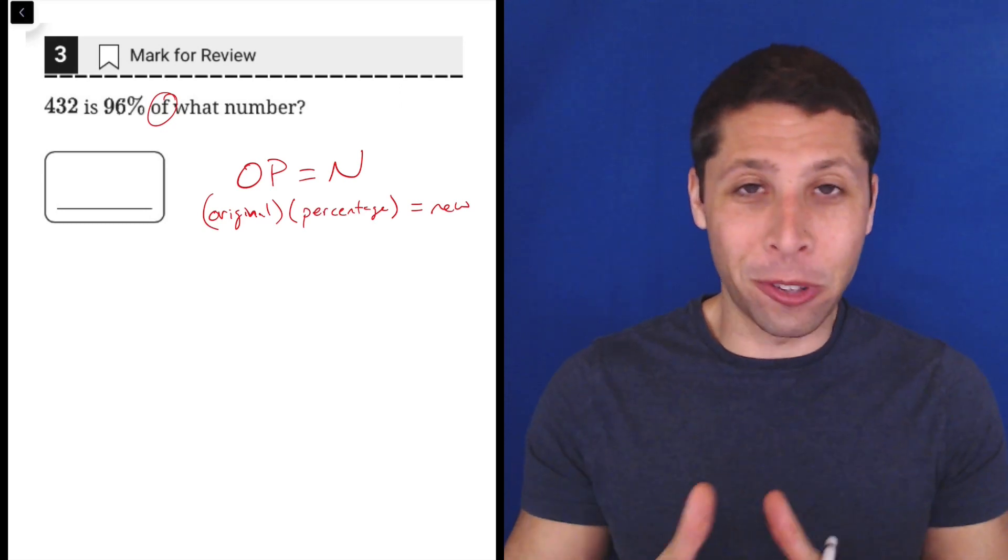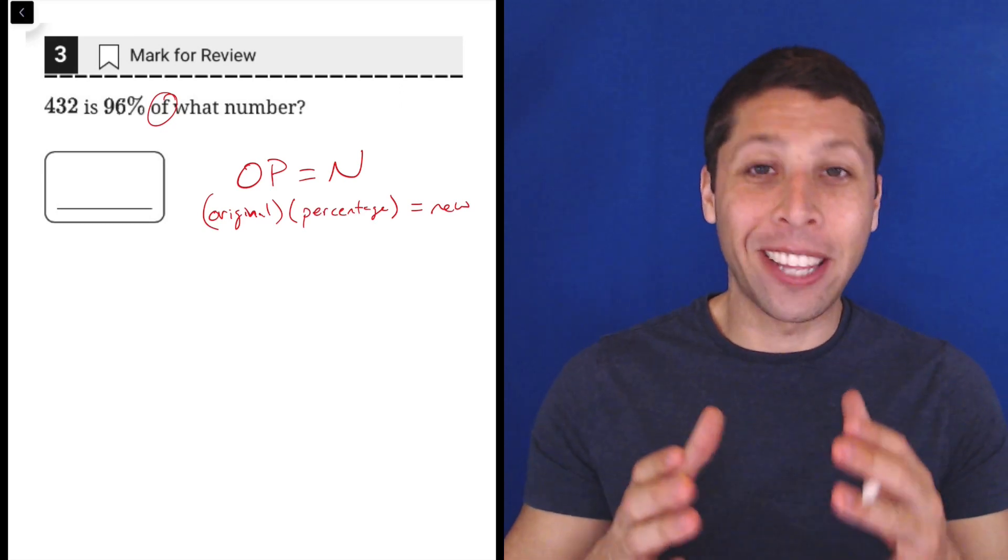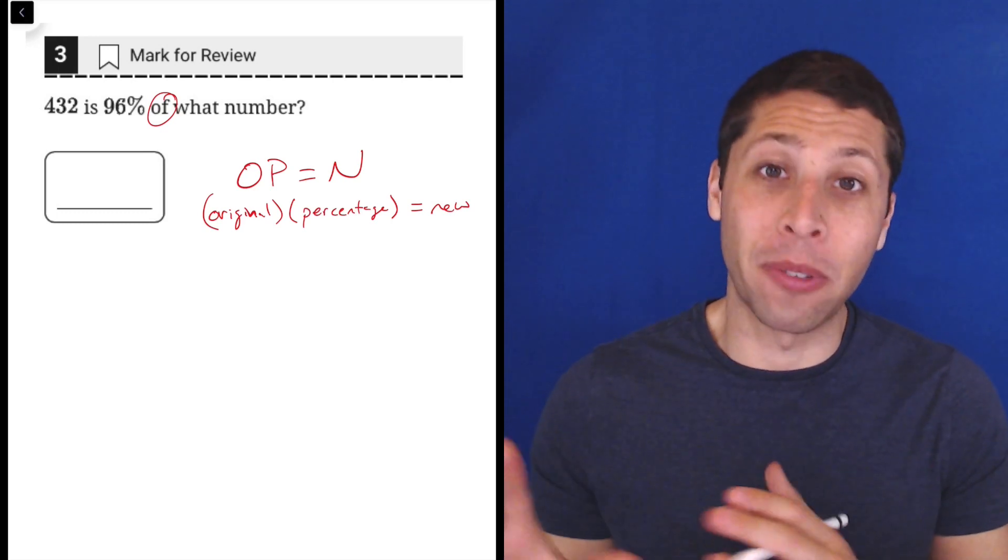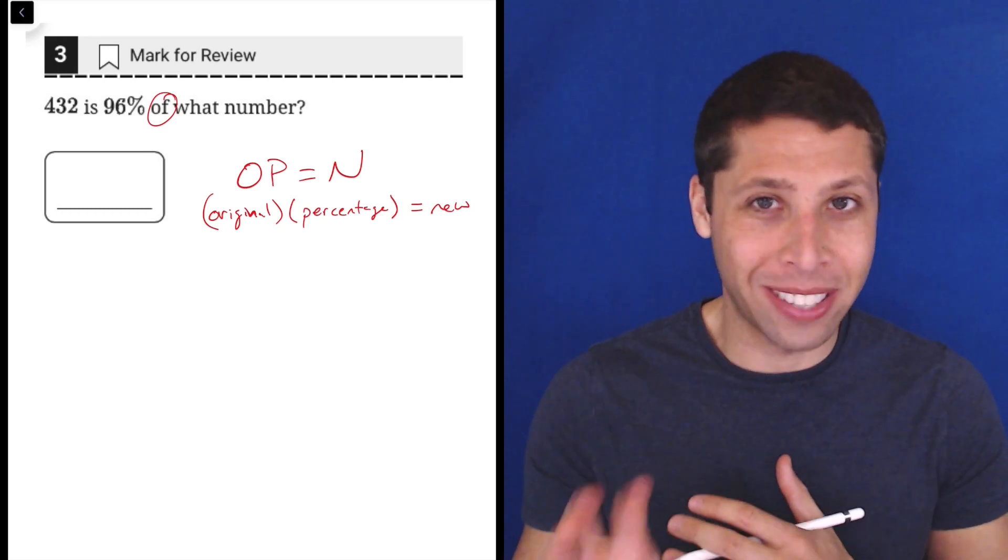So what the SAT is always going to do is they're going to give us two of the three. And what they love to do is give us two that don't really feel intuitive in terms of how we normally think of percentages. So that's exactly what they're doing here.